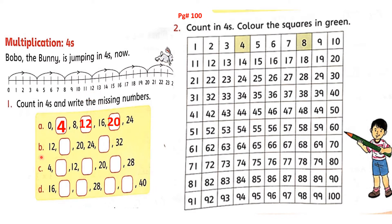Now next question number B. Start jumping from number 12 — stand at number 12. Where will it go? Yes, skip next 3 numbers — 13, 14, 15. What answer is written here? Yes, the answer is 16, right here. In the same way, students, you will solve question number 1. Try to solve yourself.